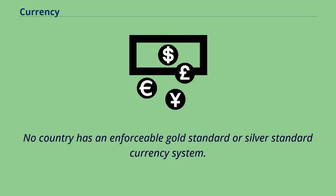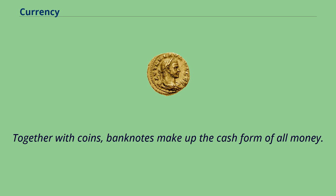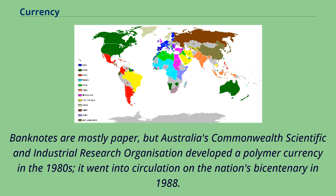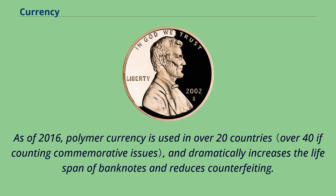No country has an enforceable gold standard or silver standard currency system. A banknote is a type of currency and is commonly used as legal tender in many jurisdictions. Together with coins, banknotes make up the cash form of all money. Banknotes are mostly paper, but Australia's Commonwealth Scientific and Industrial Research Organization developed a polymer currency in the 1980s, which went into circulation on the nation's bicentenary in 1988. Polymer banknotes had already been introduced in the Isle of Man in 1983, and as of 2016, polymer currency is used in over 20 countries, dramatically increasing the lifespan of banknotes and reducing counterfeiting.